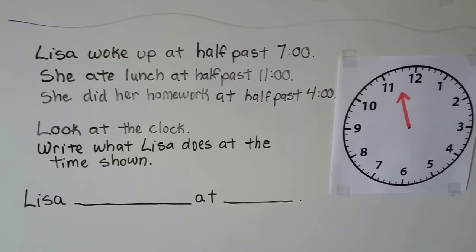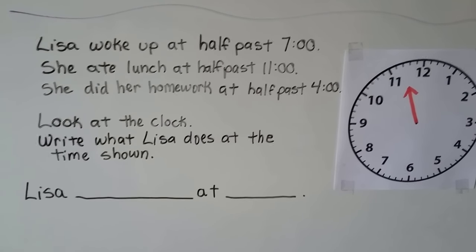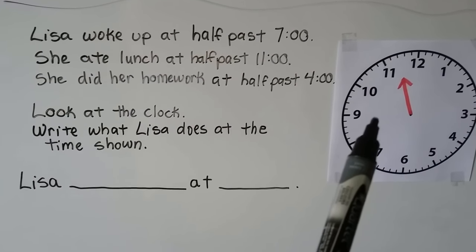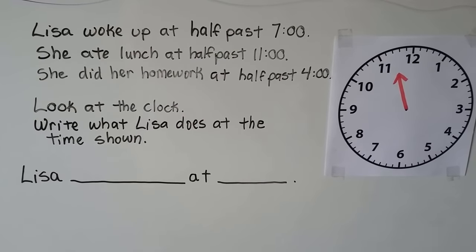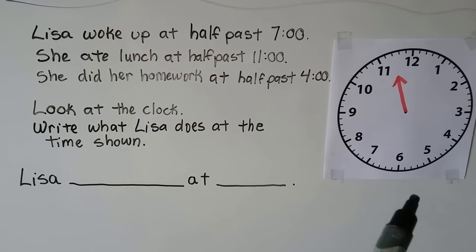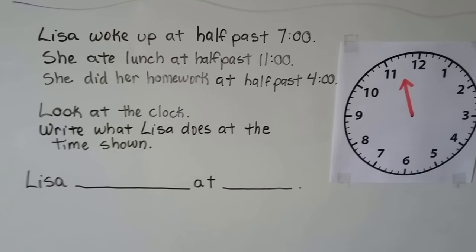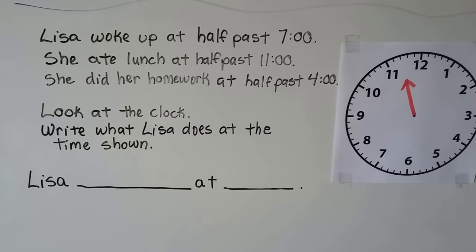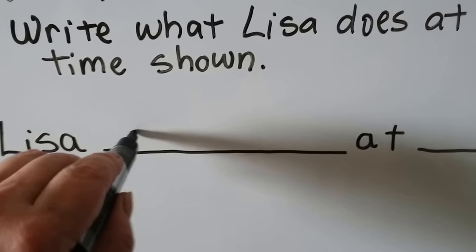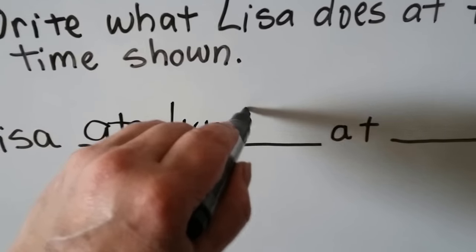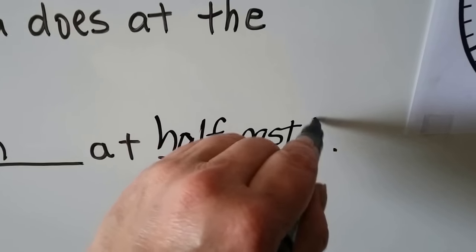Lisa woke up at half past seven o'clock, she ate lunch at half past eleven o'clock, and she did her homework at half past four o'clock. Now look at this clock — write what Lisa does at the time shown. What time does this show? It's in between the eleven and the twelve; it's not eleven anymore but it's not twelve yet. If you said half past eleven, you're right. And what did she do at half past eleven? She ate lunch. Lisa ate lunch at half past eleven o'clock.